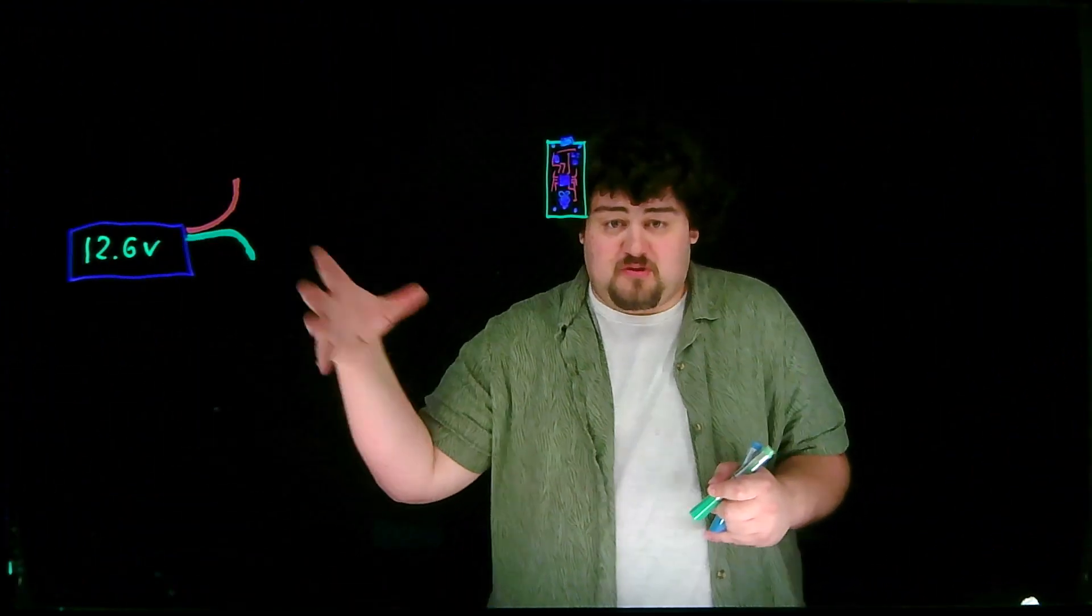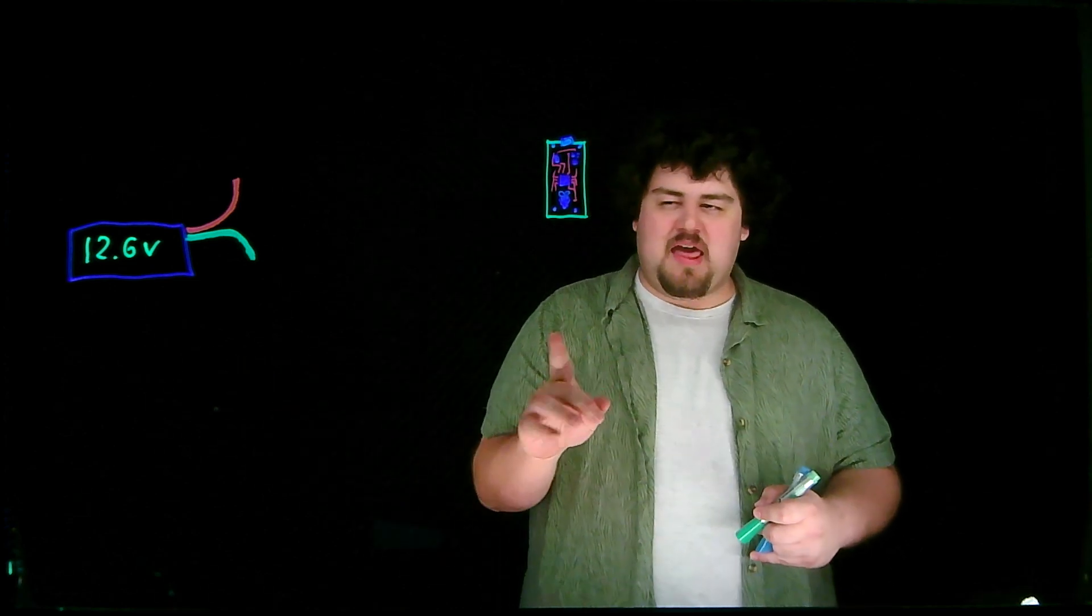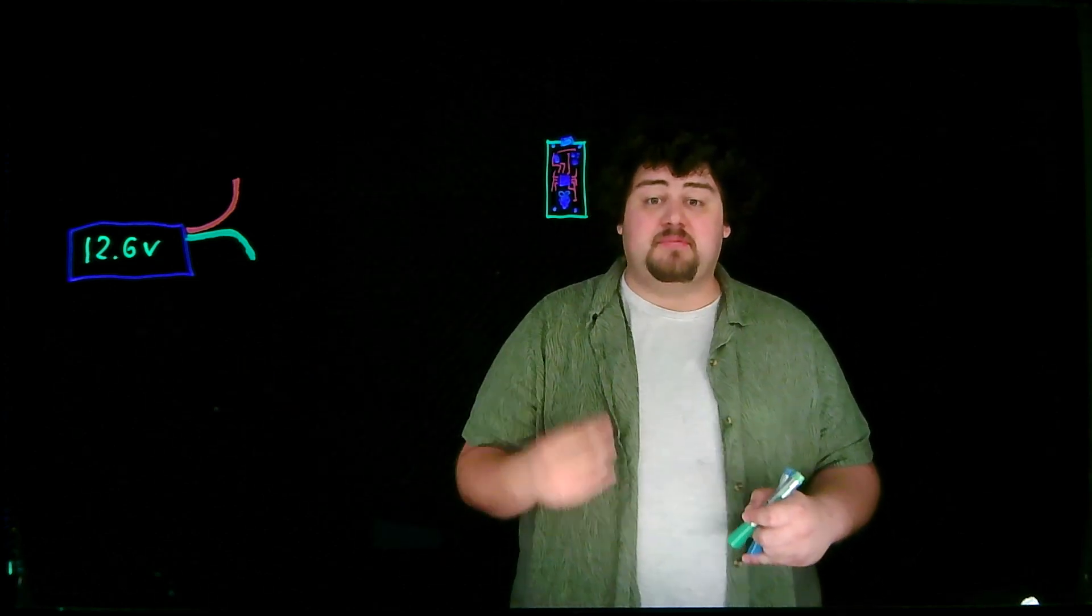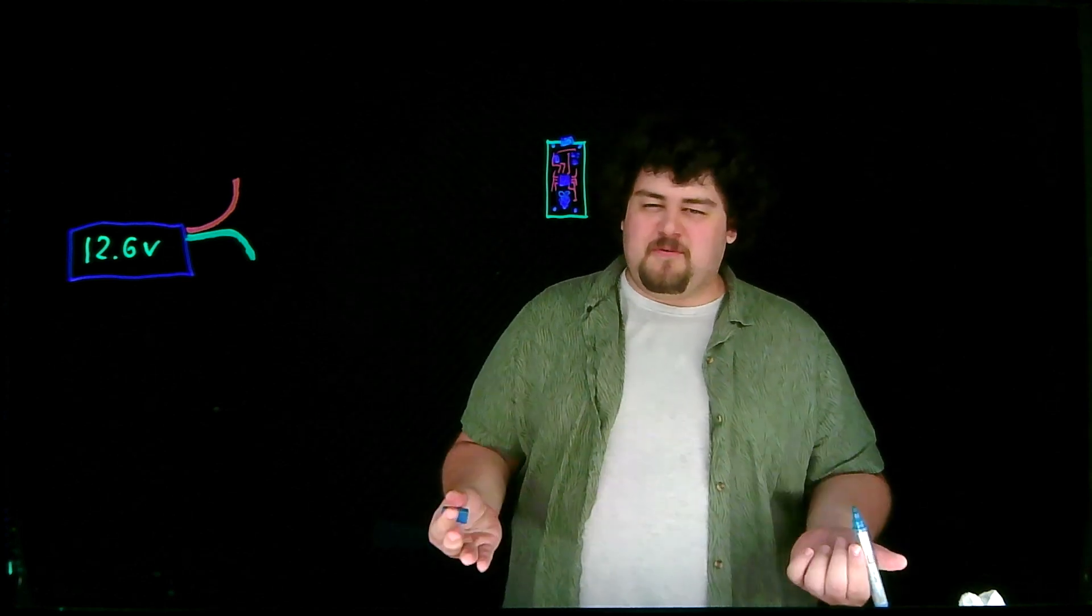Let's work with an example. We have this LiPo battery here with a voltage of 12.6 volts when it's fully charged, and we want to measure that with the Pico, which can only measure up to 3.3 volts. So what does a voltage divider look like?